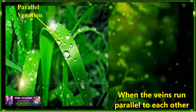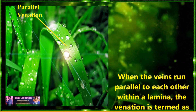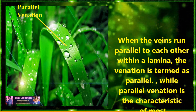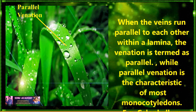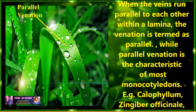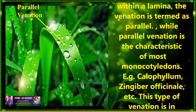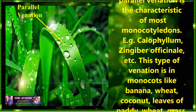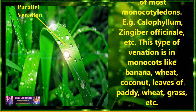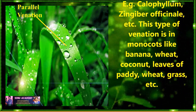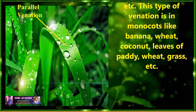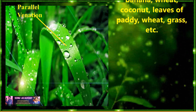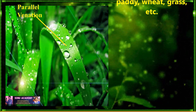Parallel venation: when the veins run parallel to each other within a lamina, the venation is termed as parallel venation. Parallel venation is the characteristic of most monocotyledonous plants. Examples are Calophyllum, Zingiber officinale, etc. This type of venation can be seen in monocot plants like banana, wheat, coconut, leaves of paddy, grass, etc.